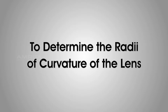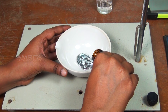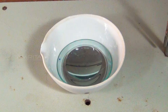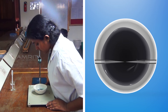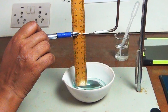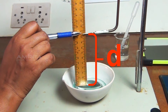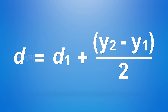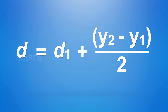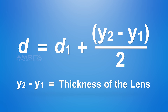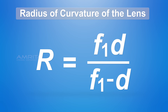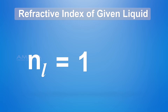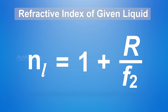To determine the radius of curvature of the lens: The convex lens is floated in mercury taken in a china dish, with its marked face in contact with mercury. The pointer adjustment for coincidence is done and the distance from the top d1 of the lens is measured. The distance d of the pointer from the center of the lens is calculated using: d = d1 + (y2 − y1) / 2, where y2 − y1 is the thickness of the lens. Then calculate the radius of curvature using: R = (F1 × d) / (F1 − d). The refractive index of the given liquid can then be calculated using: NL = 1 + R / F2.